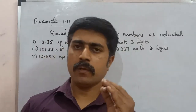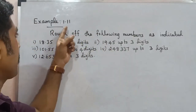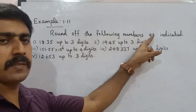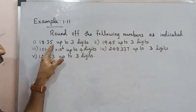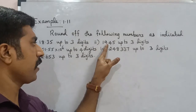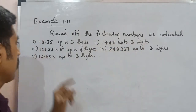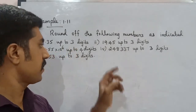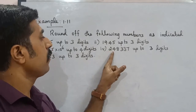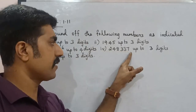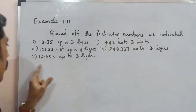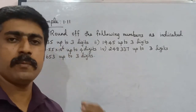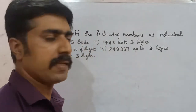Hi students. See example 1.11: Round off the following numbers as indicated. First: 18.35 up to 3 digits. Second: 19.45 up to 3 digits. Third: 101.55 × 10^6 up to 4 digits. Fourth: 2,48,337 up to 3 digits. Fifth: 12.653 up to 3 digits. We have to calculate the final result.